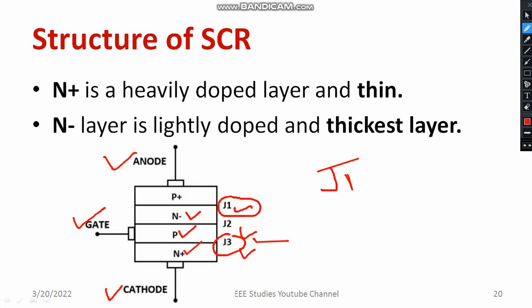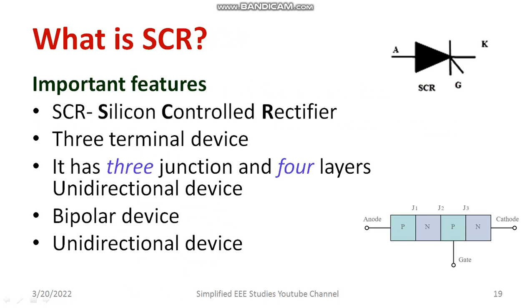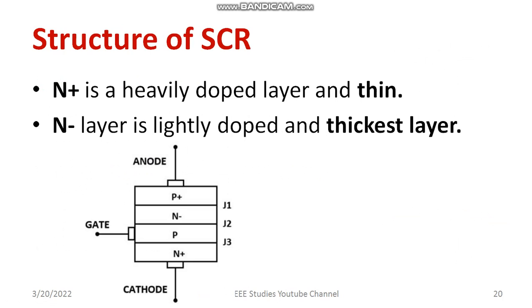I am talking about the thickness of the depletion layer. Make a note of this. We can understand that as the doping level is high, the width of the depletion layer is less — both are inversely proportional. In this session, we discussed the salient features of SCR: why SCR is called a semi-controlled or half-controlled device, how many junctions are there (three junctions and four layers), that it is a bipolar and unidirectional device, and the structure including doping level and width of the depletion layer.